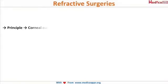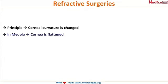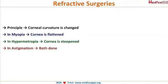The principle of refractive surgery is that the corneal curvature is changed. In myopia it is flattened, in hypermetropia it is steepened, and in astigmatism both are done.